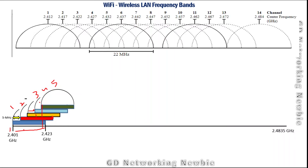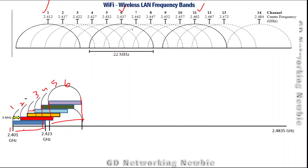Moving further, channel number six is not overlapping with channel number one. As shown here, channel number one, channel number six, and channel number eleven are not interfering with each other. You can see they do not step into each other's frequency space, whereas channel number two starts within the range of channel number one, causing overlap.